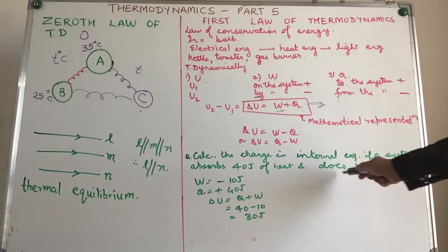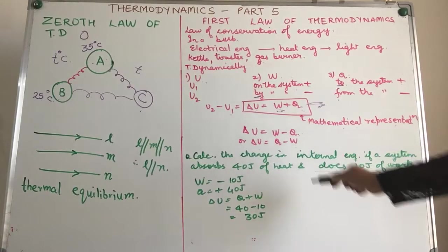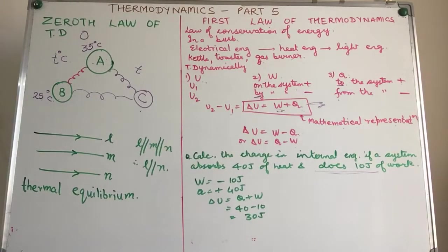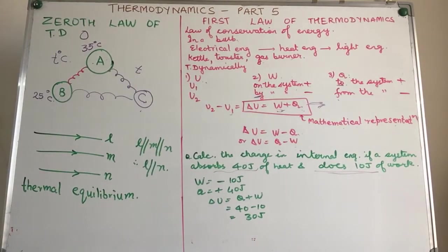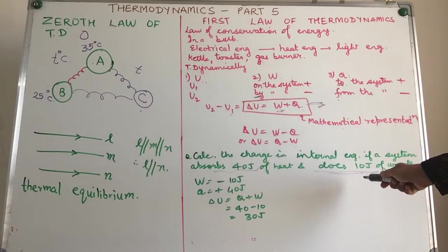If you notice over here, does 10 joules of work, that means work is being done by the system. Absorbs means heat is being added to the system. In other words, our Q takes a positive sign, whereas W takes a negative sign.